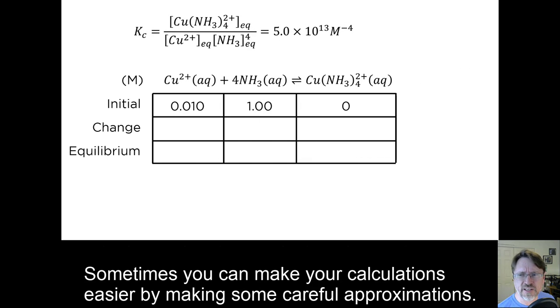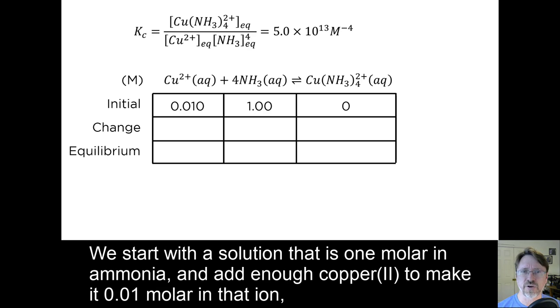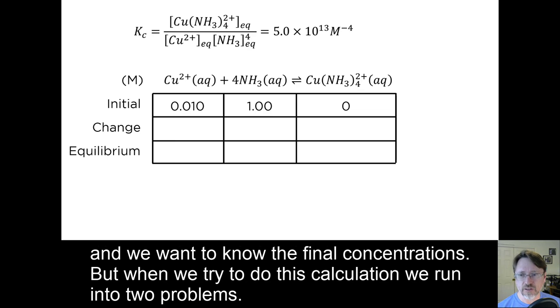Sometimes you can make your calculations easier by making some careful approximations. For example, let's look at the complex ion formation between copper 2 and ammonia. We start with a solution that is 1 molar in ammonia, and add enough copper 2 to make it 0.01 molar in that ion. And we want to know the final concentrations. But when we try to do this calculation, we run into two problems. First,